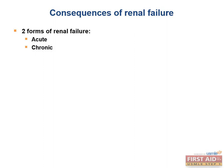There are two forms of renal failure — acute and chronic — and both of them lead to an inability to make urine and excrete wastes, but they occur over different time periods. The consequences of renal failure can be remembered with the acronym MAD HUNGER.